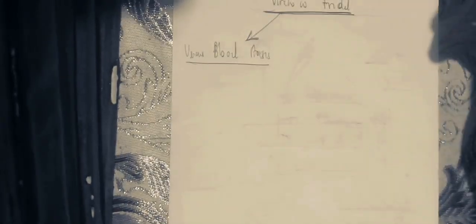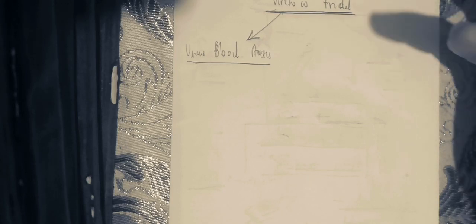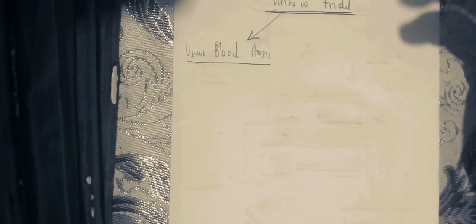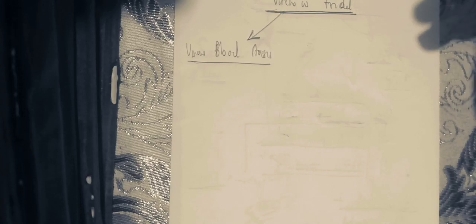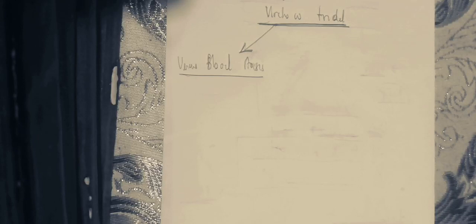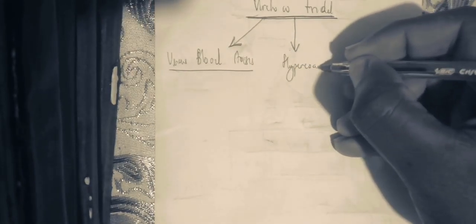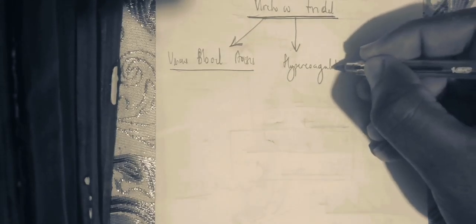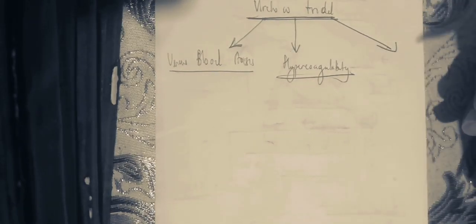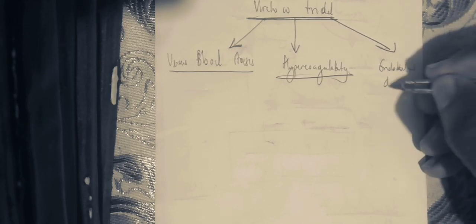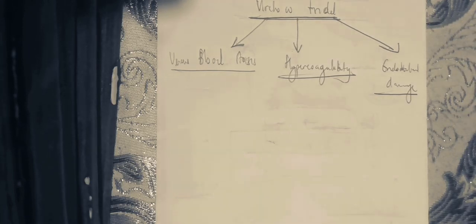Virchow's triad is made up of three things. The first element is venous blood stasis, which can result in a secondary venous disorder or coagulation or thrombosis at the level of the veins. The second element is hypercoagulability. The third element is endothelial damage. Those are the three major mechanisms under Virchow's triad.